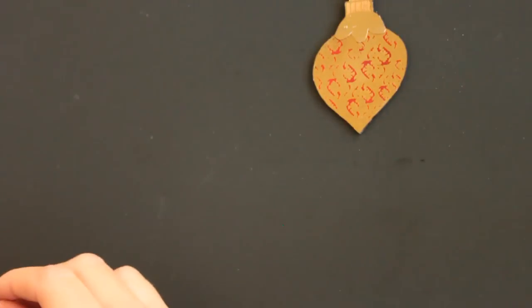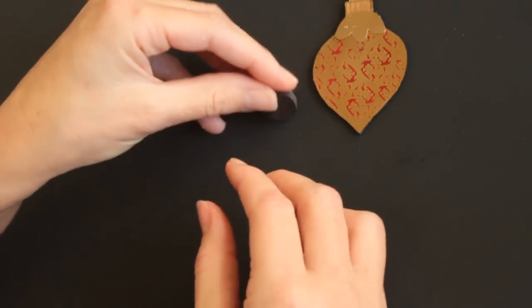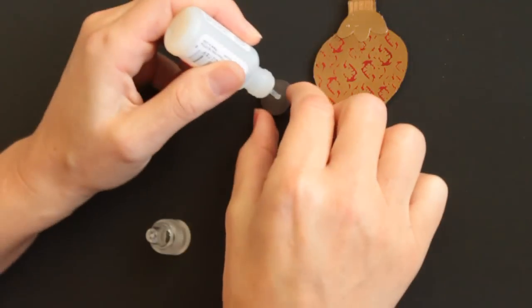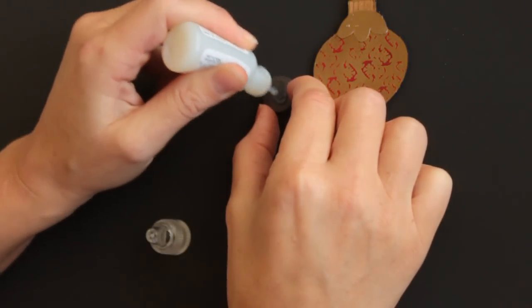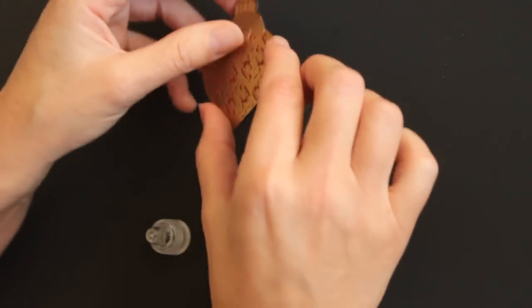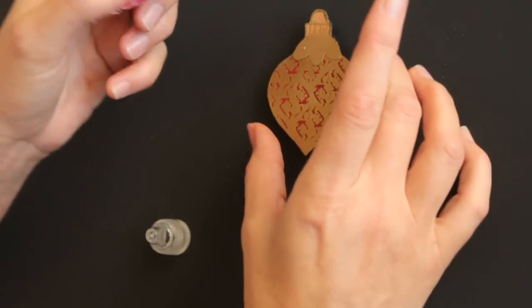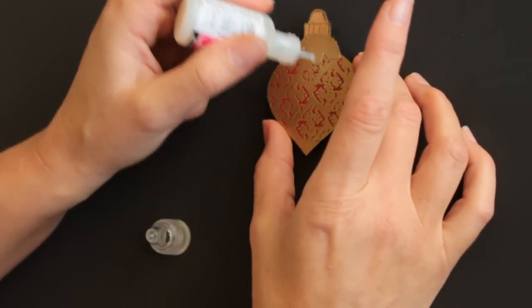Now I bought big strong magnets at Michaels. Just add a little glossy accent over that and adhere my ornament on top, and then there are only a few steps left.